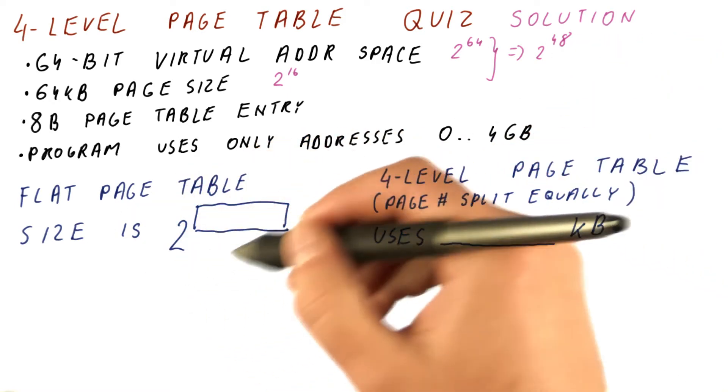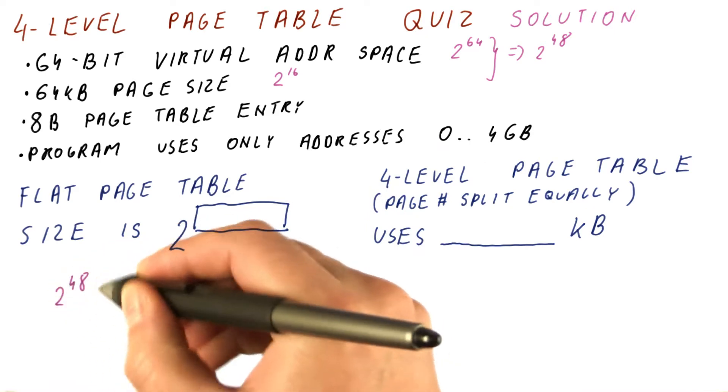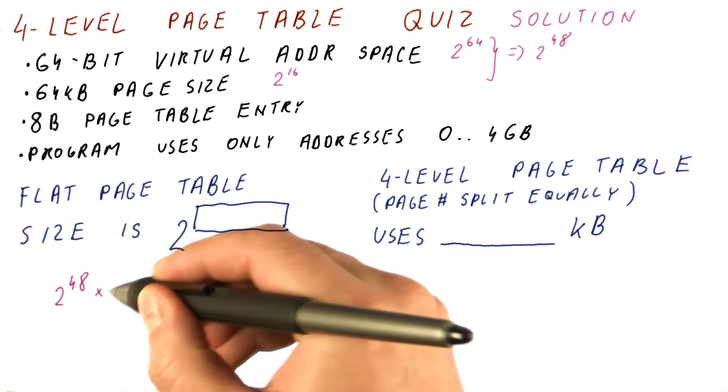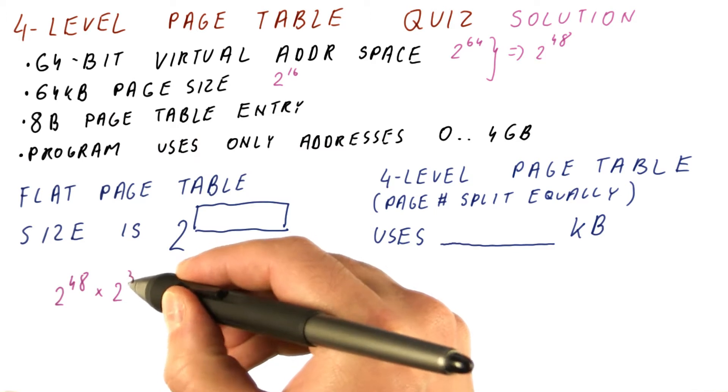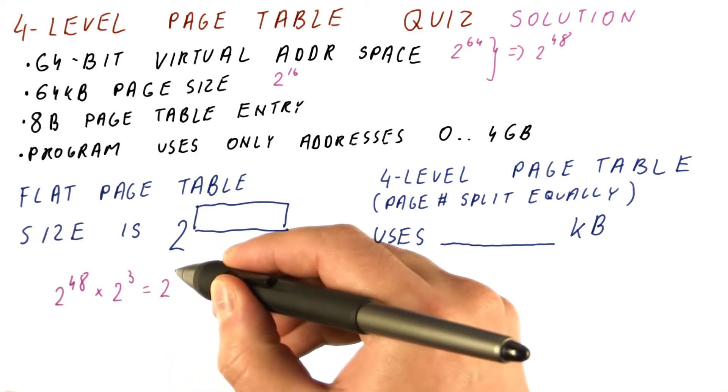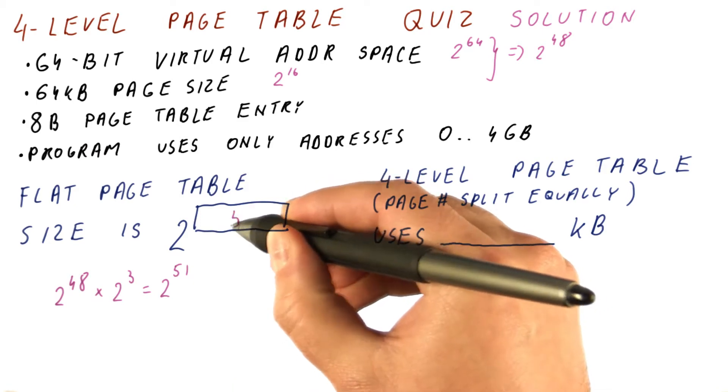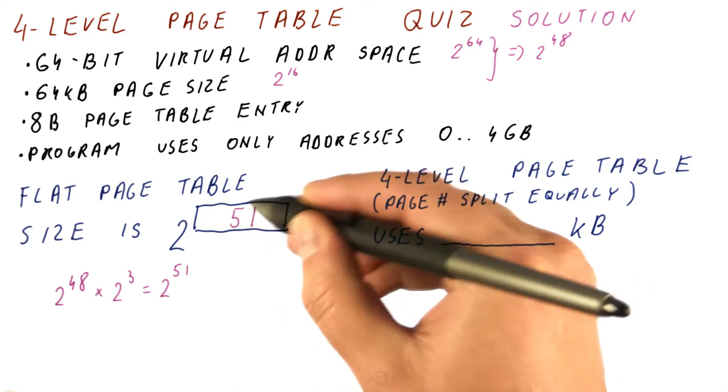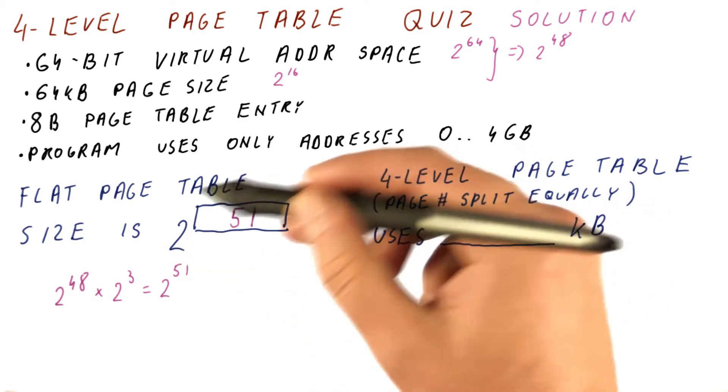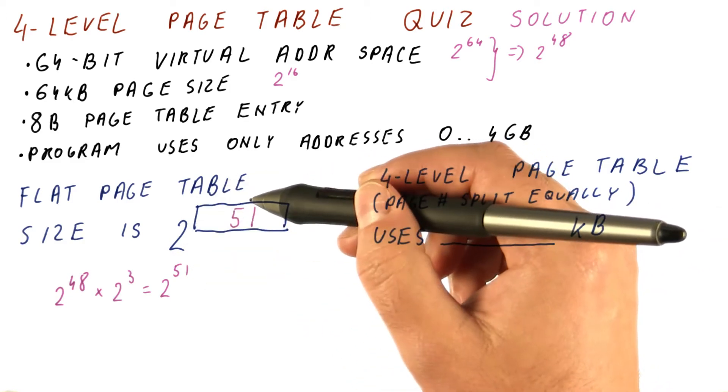For a flat page table, the page table has 2 to the 48th entries, times the size of each entry is 2 to the third. So the overall size is 2 to the 51st bytes. So the answer here is 51. This is an enormous page table, many, many terabytes of page table.